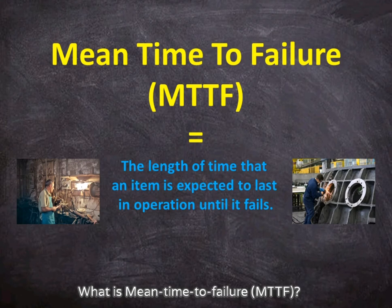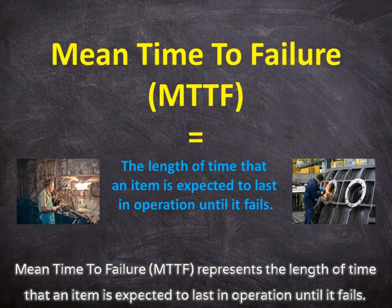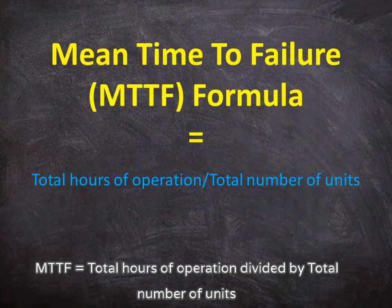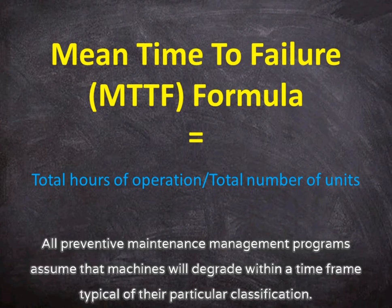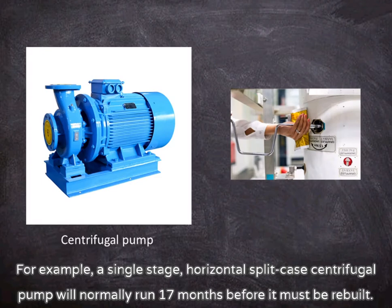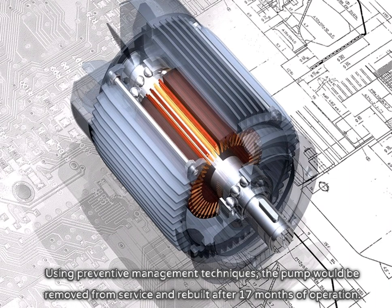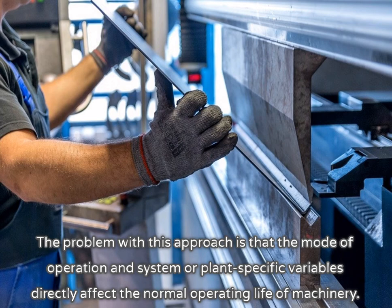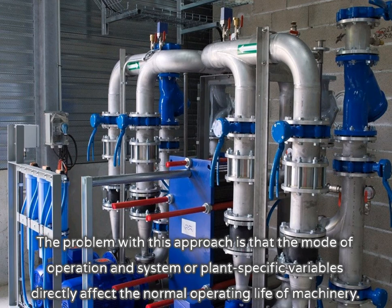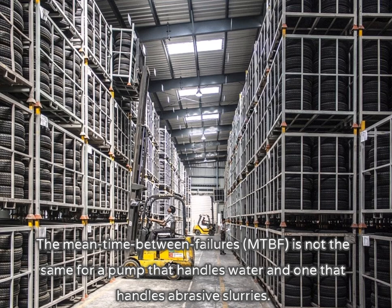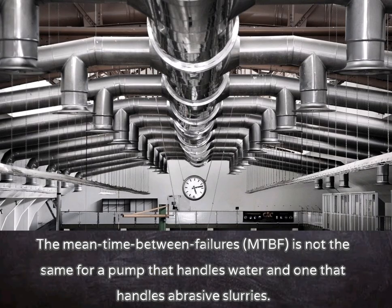What is mean time to failure MTTF? Mean time to failure MTTF represents the length of time that an item is expected to last in operation until it fails. MTTF equals total hours of operation divided by total number of units. All preventive maintenance management programs assume that machines will degrade within a time frame typical of their particular classification. For example, a single-stage, horizontal-split-case centrifugal pump will normally run 17 months before it must be rebuilt. Using preventive maintenance management techniques, the pump would be removed from service and rebuilt after 17 months of operation.